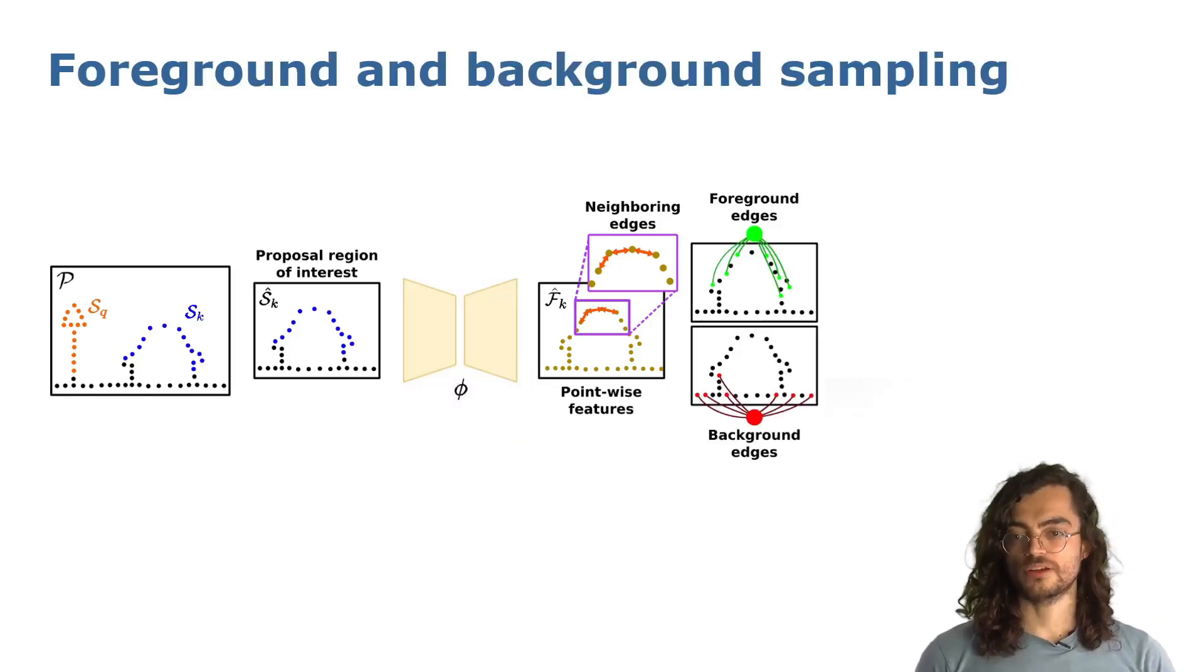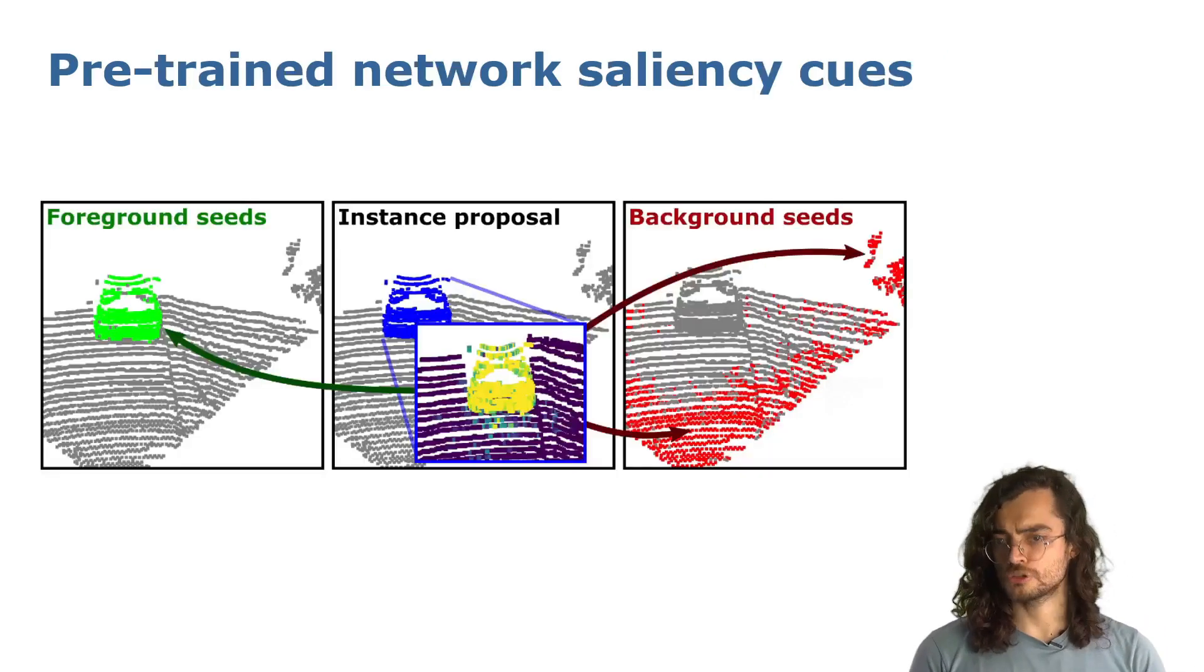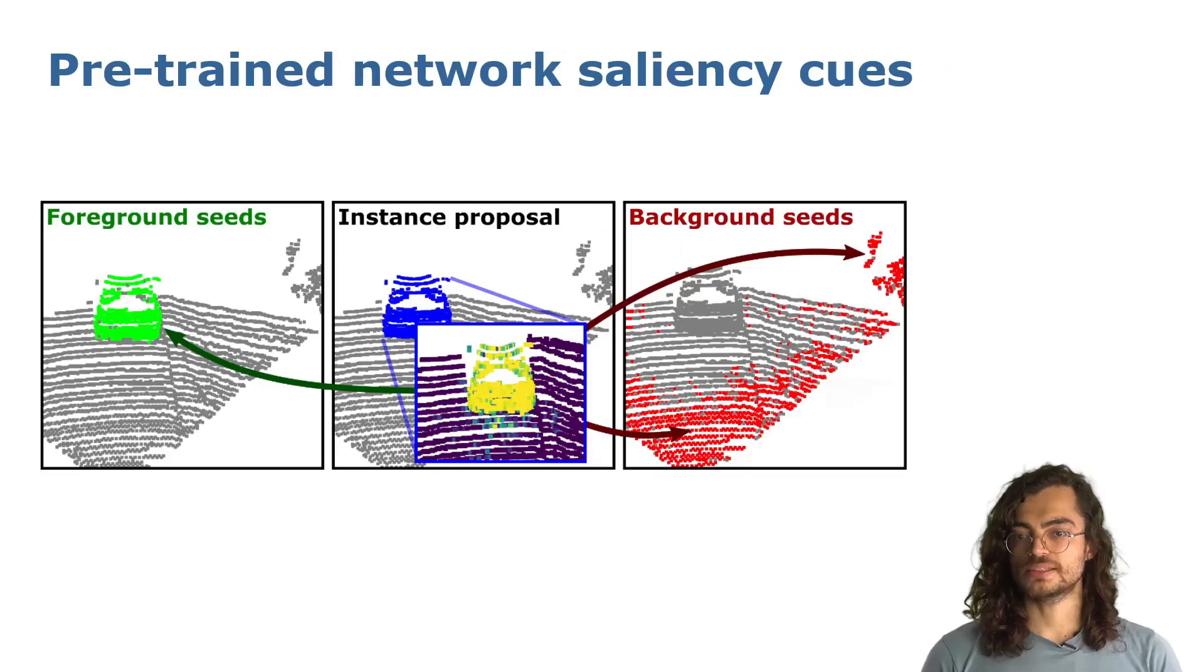To apply GraphCut over the point cloud, we need to sample foreground and background points as seeds. This sampling gives an initial guess of points that may belong to the instance to be segmented. To sample those points, we compute the salience values over the instance proposal features with the self-supervised training network.